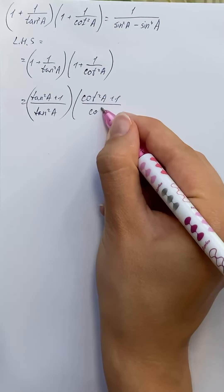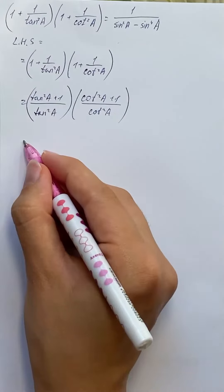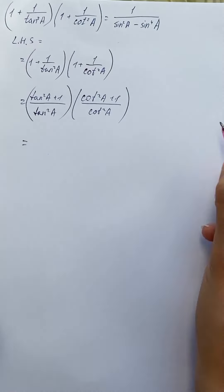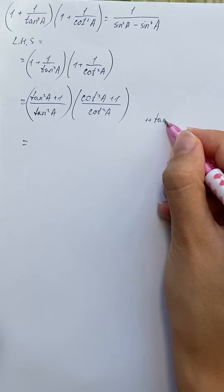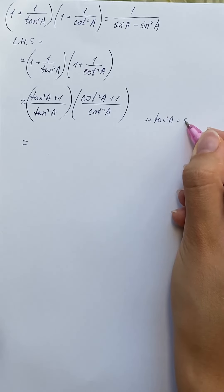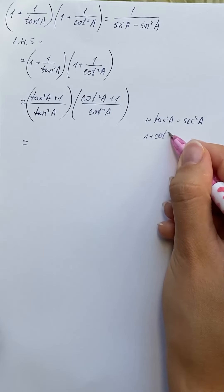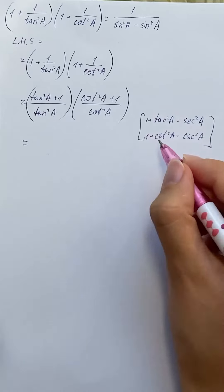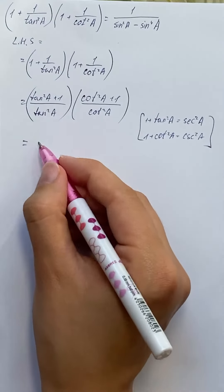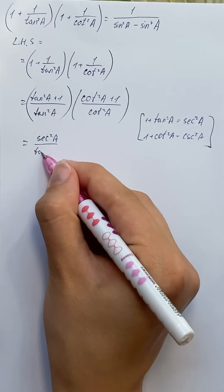Now we know the trigonometric identities that 1 + tan²a equals sec²a, and 1 + cot²a equals csc²a. So we're going to use these, and we have in the numerator sec²a / tan²a times csc²a / cot²a.